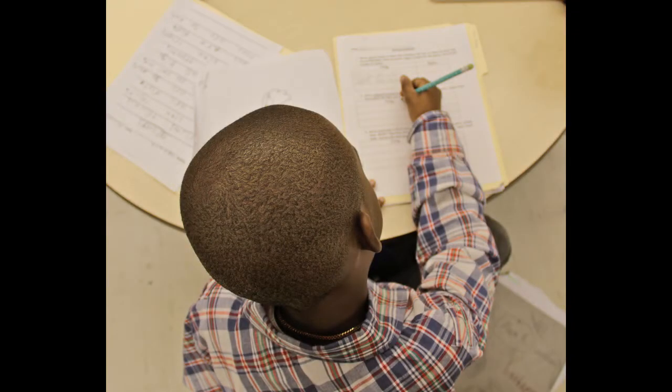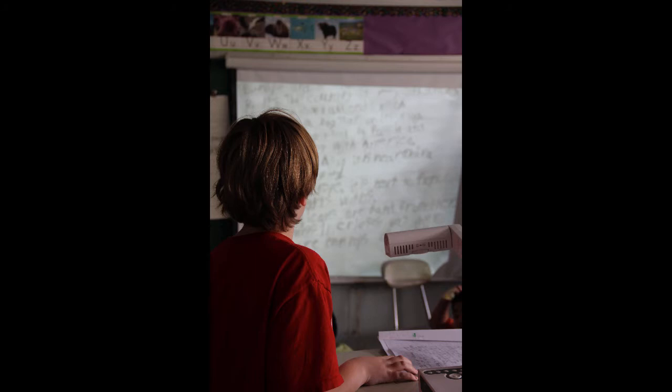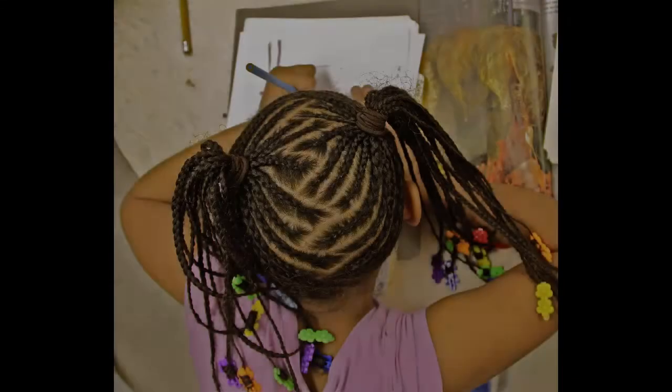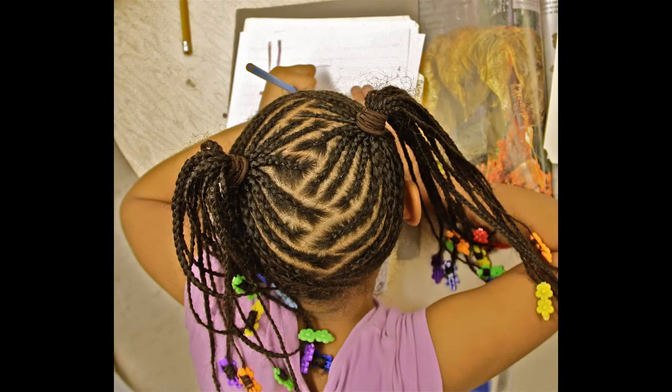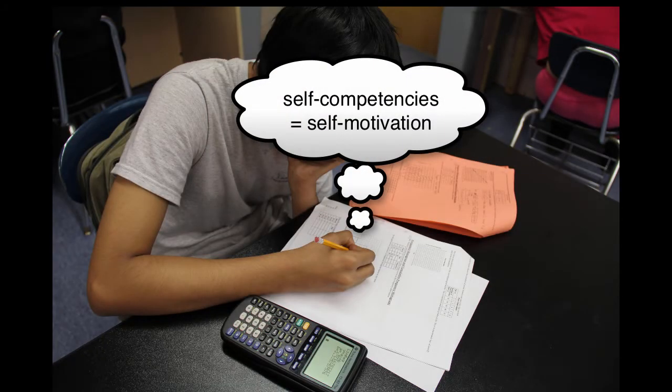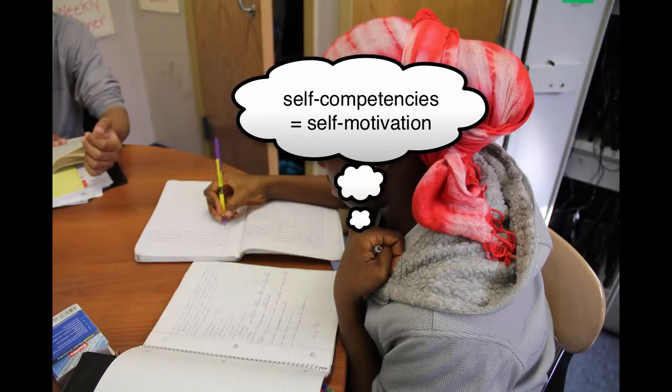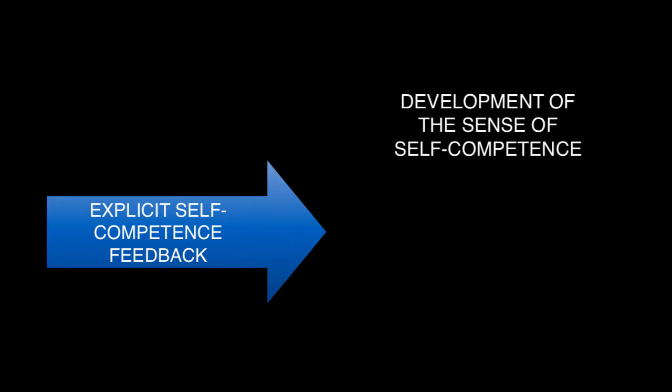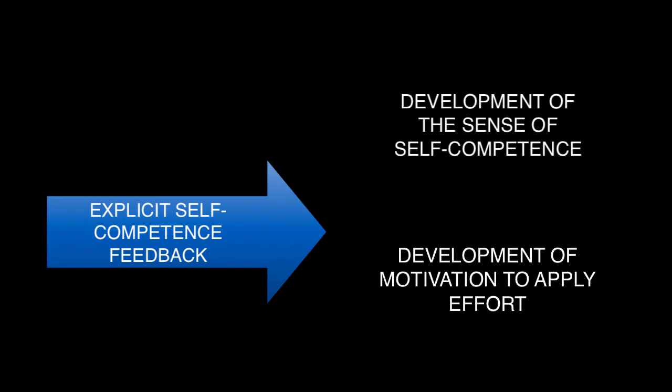The more we can help students understand that they have agency and can control their destiny as learners, the more successful they will be in school. The more they know exactly what things they can do to improve their competencies, the more targeted their efforts at improvement can become. And the more clearly they understand their competencies, the more motivated and self-determined they will become. Explicit competence feedback is key to building a student's sense of self-competence and to helping them strategically apply their effort. With these insights in mind,